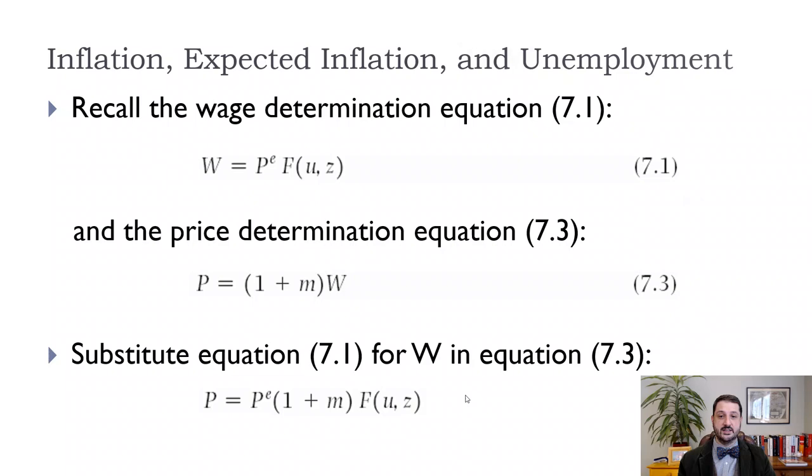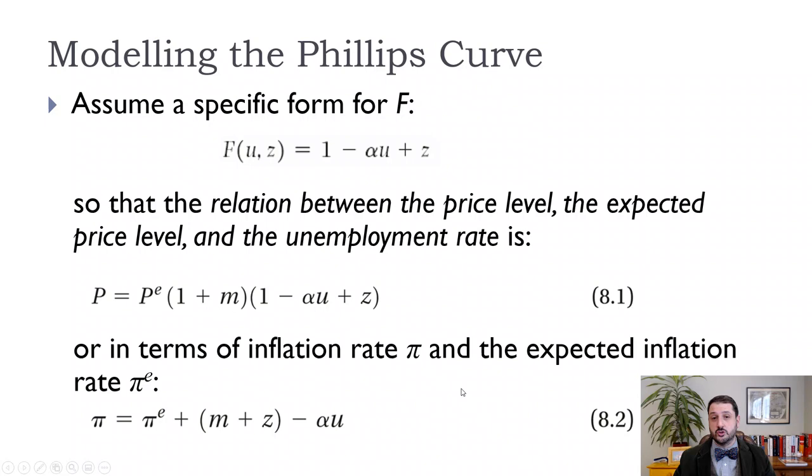So now we're going to make our specific form assumption about f just to make it easier. Obviously, it doesn't really matter how we throw in z because z is a catch all variable, but we're going to assume this linear negative relationship in the unemployment rate. Now, as you saw from the data, it's clearly not just a linear relationship, but that will simplify things that will allow us to get a solution for the Phillips curve and we'll take it from there. So now we have the price level p is equal to the expected price level times one plus the markup times this f function, which now is pretty simple in terms of its form. So it's just one minus alpha times the unemployment rate. So alpha is just some parameter plus z. And remember, z is still our catch all variable.